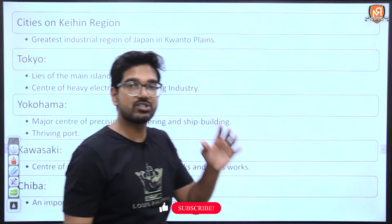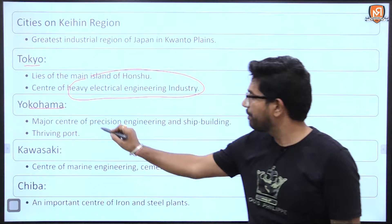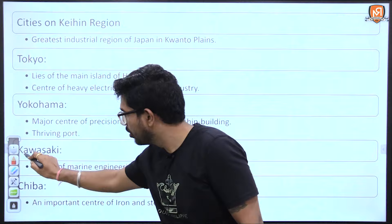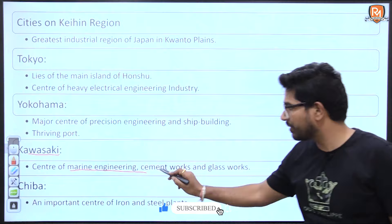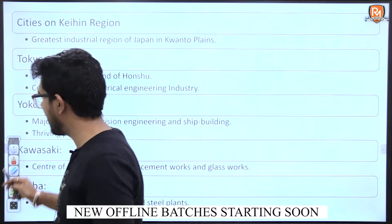The important industrial cities include Tokyo, known for heavy electrical engineering industries; Yokohama, known for precision engineering, shipbuilding, and it is also one of the greatest thriving ports after Tokyo; and Kawasaki, known for marine engineering, cement work, and glass work.